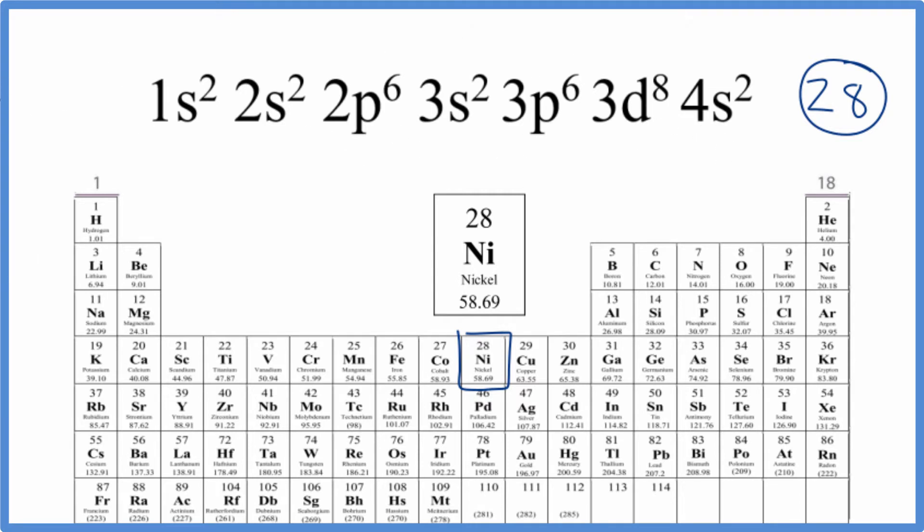This is the long form electron configuration. We could also write this as the shortened version, the abbreviated or condensed electron configuration.